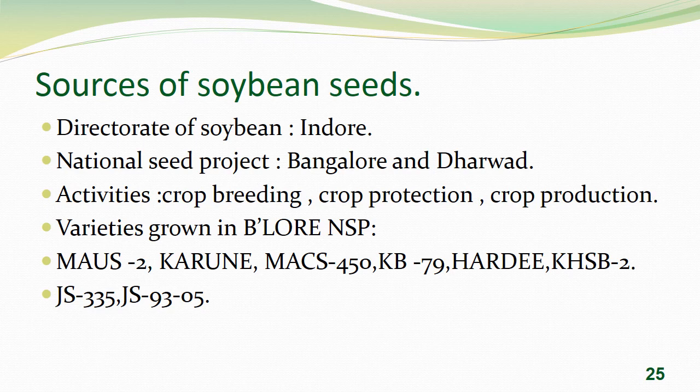Sources of soybean: the Directorate of Soybean Research is located at Indore; national seed projects are located in Bengaluru and Dharwad. Activities include crop breeding, crop protection, and crop production. Varieties grown in Bengaluru include NSBR, MAUS-2, Karune, MAC-450, KHSB-2, and JS-93-05.